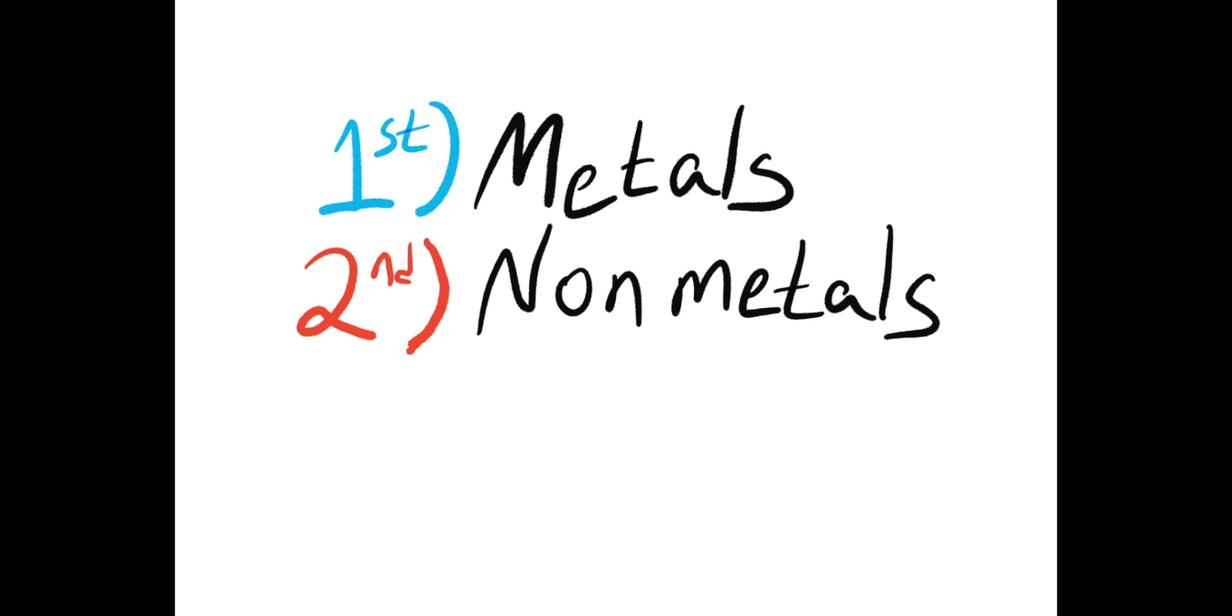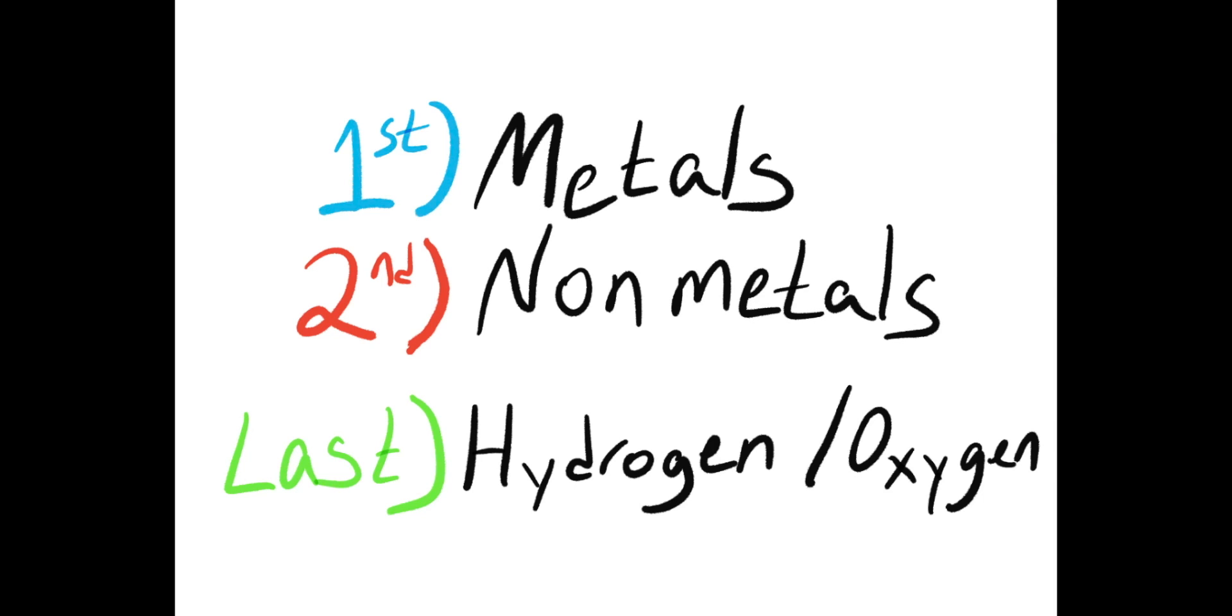Here's a helpful hint. When balancing chemical equations, start by balancing your metals first. Then move to your non-metals and leave any oxygen or hydrogen atoms till the very end. It will save you a lot of time erasing and redoing things.